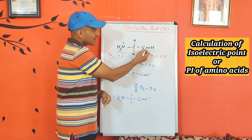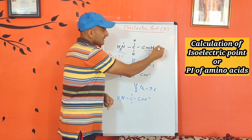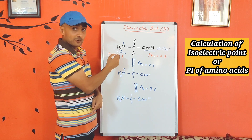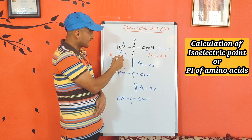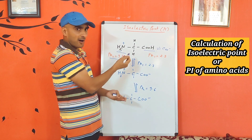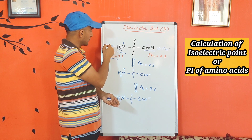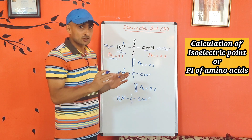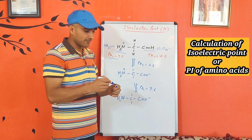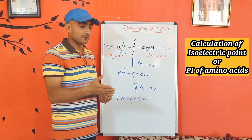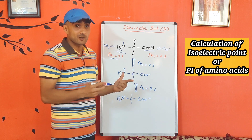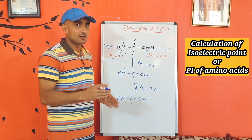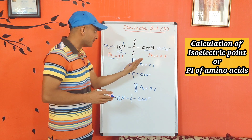At pH 2.3, it exists as 50% COOH and 50% COO- species. Similarly, the basic amino group at pH 9.6 will be half NH3+ and half NH2. There is another rule to calculate the charge on a group with respect to pH, which depends on the pK value: if you keep a group at a pH less than its pK value, that group will be protonated. And if you increase the pH beyond the pK value of that group, it will be deprotonated.